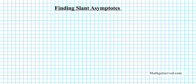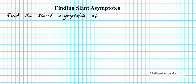G'day students. Next we're going to be going over two examples on how to find the slant asymptote of rational functions. Let's go ahead and write down the instruction for the examples. The task is to find the slant asymptote of the following functions.